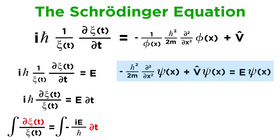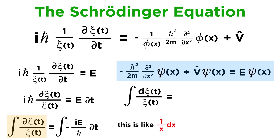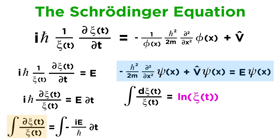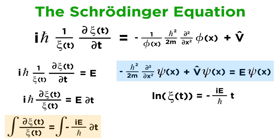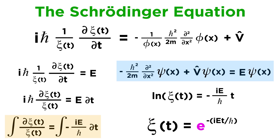Now let's integrate both sides. Remember that we split up the partial derivative notation, which means we integrate with respect to different things for each expression. On the left side, we can think of dψ(t) as being just like dx, giving us an expression resembling 1 over x dx. The integral of 1 over x is the natural log of x, so integrating the inverse of ψ(t) gives us the natural log of ψ(t). On the right side we have the integral of negative i·E over h-bar dt — these are all constants and can be pulled out, leaving the integral of dt, which is simply t. That gives us negative i·E over h-bar times t. We set the two sides equal and solve for ψ: recalling that the natural log has base e, ψ(t) equals e raised to the exponent negative i·E·t over h-bar.